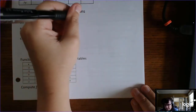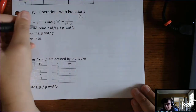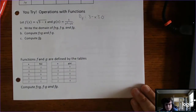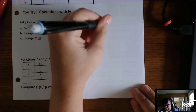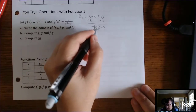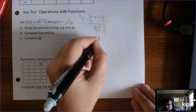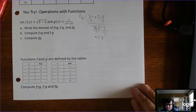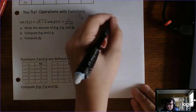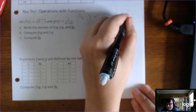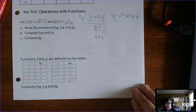The domain of f: take what's under the radical — what's under an even-index radical must be greater than or equal to zero. So we solve: negative x plus 3 is greater than or equal to zero, subtract 3 to get negative x is greater than or equal to negative 3, then divide by negative one and switch the inequality — x must be less than or equal to 3. The domain of g is a rational function, so the denominator cannot equal zero.